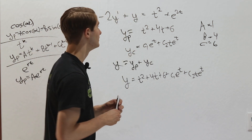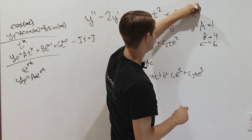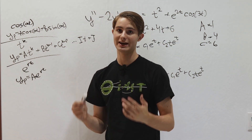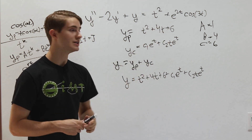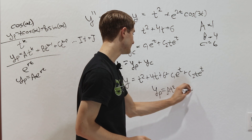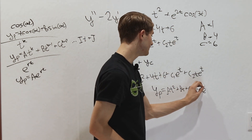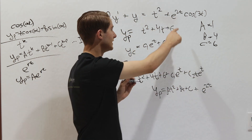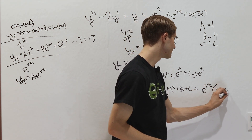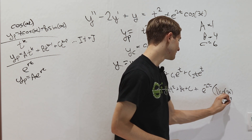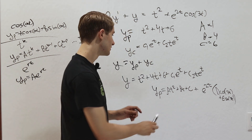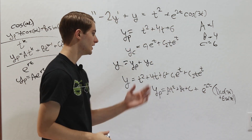If instead you have a product, like e to the 2t times cosine(3t), you multiply the guesses together. The guess for this case would be: (at squared plus bt plus c) — wait, actually for e to the 2t times cosine(3t), you multiply the e to the rt guess by the cosine guess. So the particular solution guess is e to the 2t times (d cosine(3t) plus e sine(3t)). You don't need separate constants for e to the 2t since they get absorbed into d and e. Plug this in to solve for all constants.